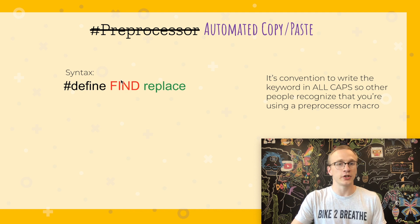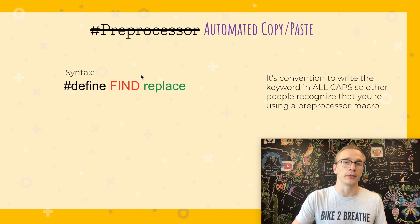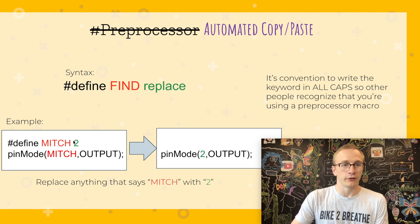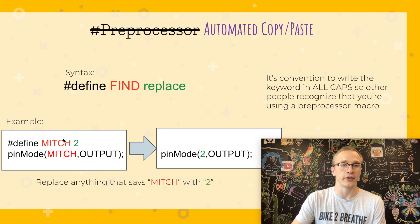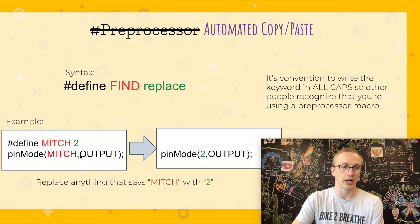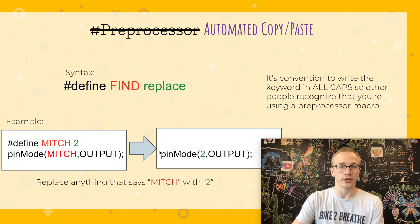It's convention to keep the keyword in all caps so people know you're using a preprocessor command. For example, if we do define MITCH 2, that will look through our code and find anywhere that says the word MITCH and replace it with the number 2. So if we called pinMode MITCH comma OUTPUT, it would find the word MITCH and replace it with 2.